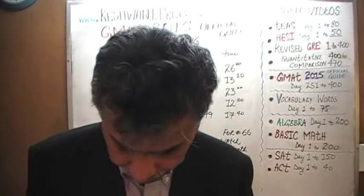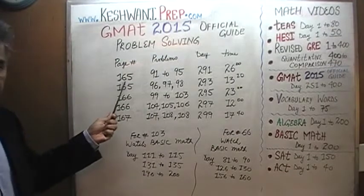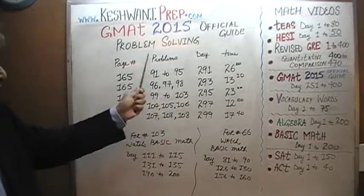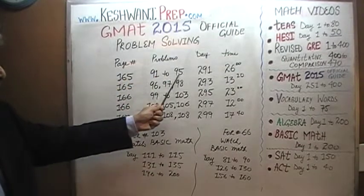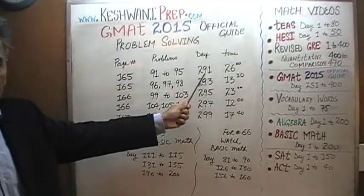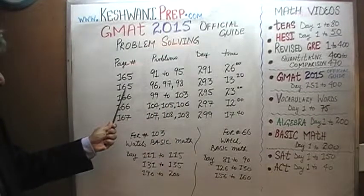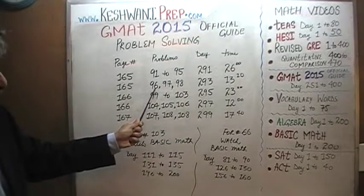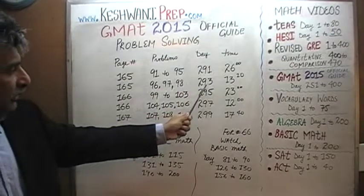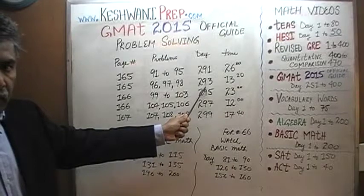I am going to simply tell you where to find the solutions to each of the given problems. On page 165, you will find problems 91 through 95. These are all problem solving questions 91 through 95. The solutions to those five problems were presented on day number 291. On page 165 again, problem number 96, 97, and 98. You will find the solutions to those problems on day number 293.